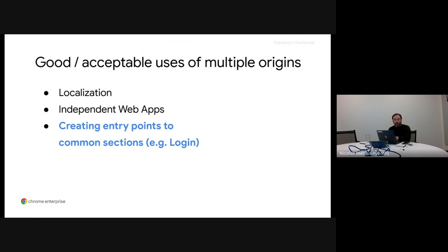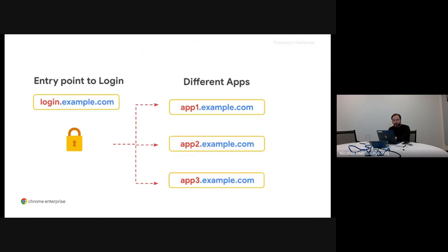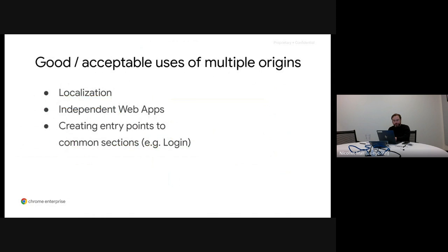Some developers also separate common sections into subdomains. While this isn't always good practice, it can be acceptable for some use cases. For example, if a company has multiple applications and all of them use the same login flow, it's not unusual to move this section to its own origin to centralize traffic instead of replicating this functionality in every single web application. However, if you're not doing any of these things, it's likely that using a multi-origin site architecture will become a disadvantage when building a progressive web app.